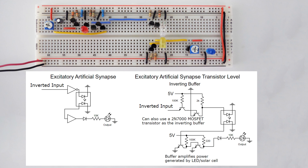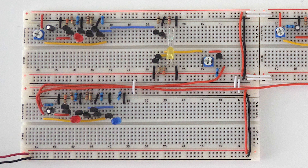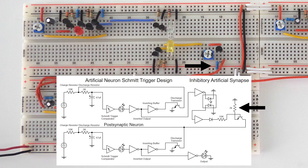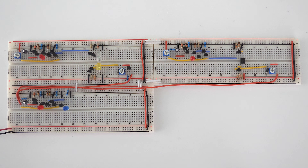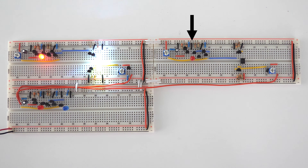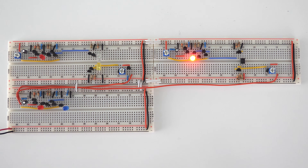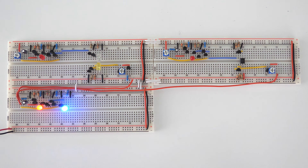Here is a circuit diagram showing how to build this circuit. A synapse built this way is an excitatory synapse. Around 20 to 30 percent of synapses are inhibitory. This artificial synapse can be turned into an inhibitory synapse by adding a transistor which connects the capacitor to ground when the synapse is on, which will reduce the charge rather than add charge. The resistor in this case controls how much charge will be removed when the synapse is active.